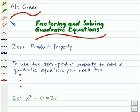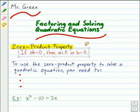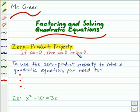To solve a quadratic equation with factoring, you need to use the zero product property. This property says that if you have a product, a times b equals zero, then either a equals zero or b equals zero.